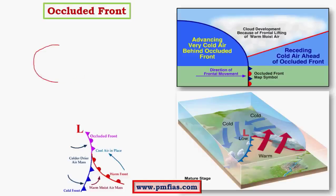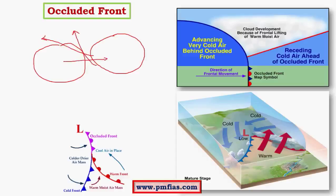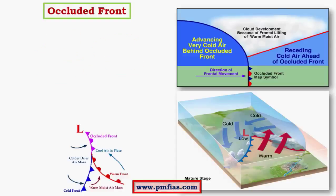We know that there is a cold air mass and a warm air mass. In a warm front, the warm air mass slides over the cold air mass. In a cold front, the cold air mass pushes against the warm air mass and the warm air mass gets completely uplifted. In an occluded front, we have a combination of both cold and warm fronts with the help of convergence.